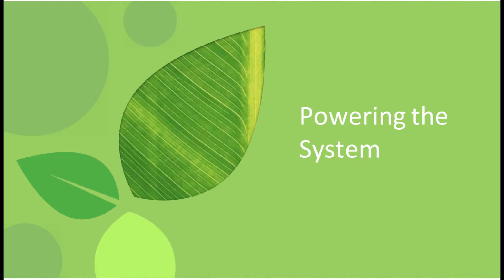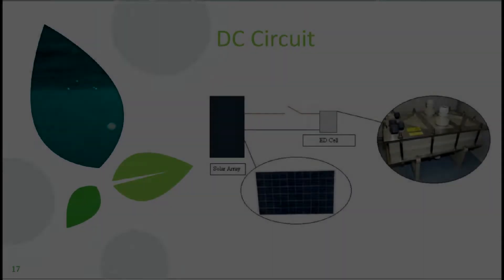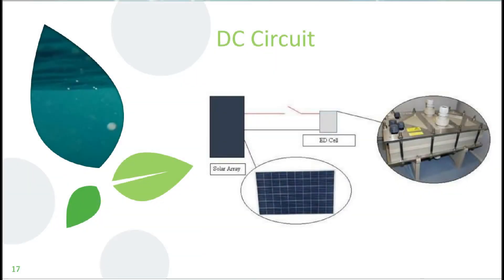Okay, so now we'll go into a little bit more detail on the circuitry of the system. So we split it up into an AC circuit and a DC circuit. As you can see, the DC circuit really is very simple. It is just the solar panels directly connected to the electrodialysis cell with the potential for including a switch for when you want to turn off the system in the evenings.